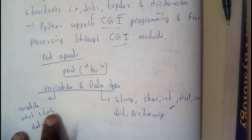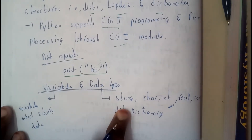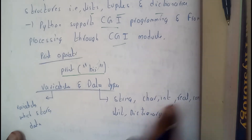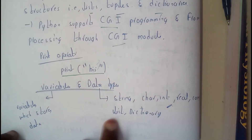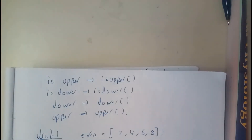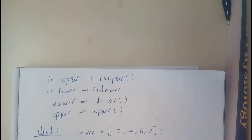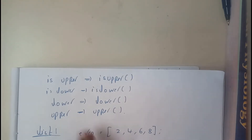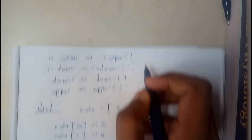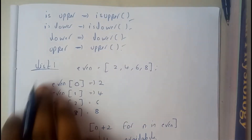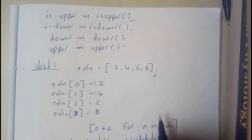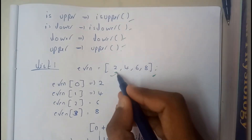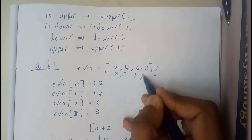Variables are used for storing data. Data types include string, character, integer, real, complex, list, tuples, and dictionaries. If you want to convert a whole string to lowercase or uppercase, you will be using specific built-in commands for that. A list is similar to an array.